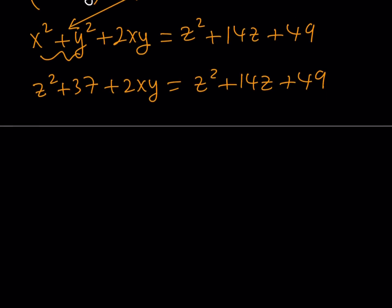So this equation might look a little complicated, but don't worry about it. This will work. Z squared cancels out. And now, from here, my goal is to get xy in terms of z. So pretty much, we're writing everything in terms of z. That's the goal. So isolate 2xy, we get 14z plus 49 minus 37. That is going to be 12. Divide both sides by 2. xy equals 7z plus 6. Great.